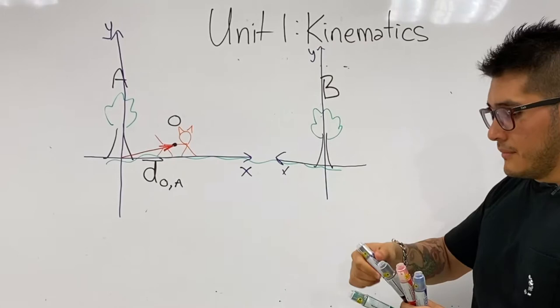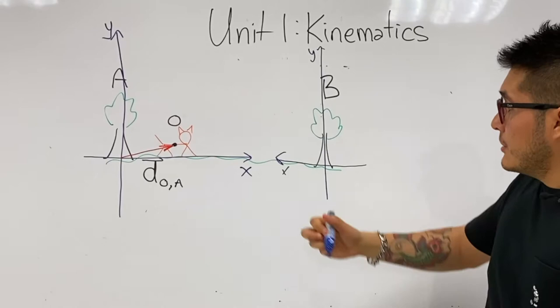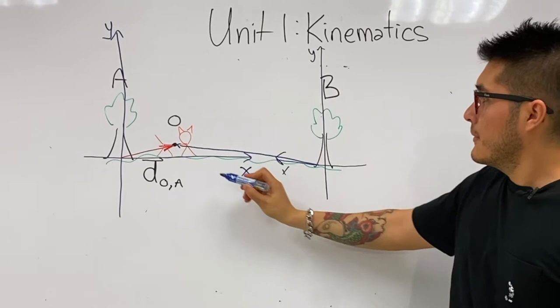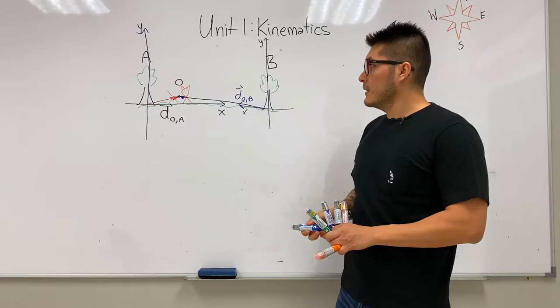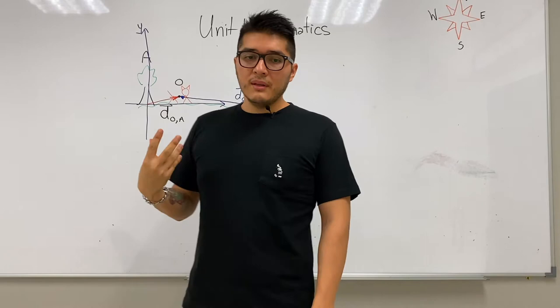Let's use a different color, we'll use blue. So the initial position vector from the second tree, tree B, this is d̂ initial B. Notice that they can both say the cheetah is some distance away from the tree.